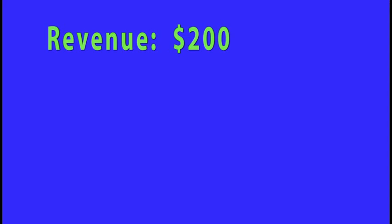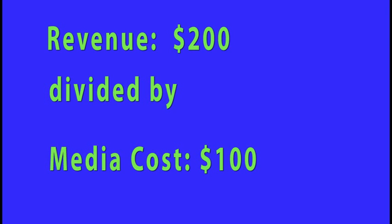The MER is calculated by dividing the revenue generated by your media by the costs that you paid for your media. So, for a given media buy, if you made $200 from customer orders, and you purchased the media for $100, then your actual MER is $2.00.